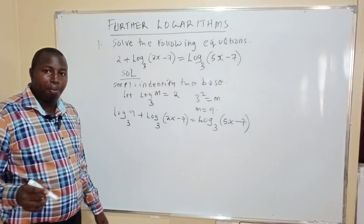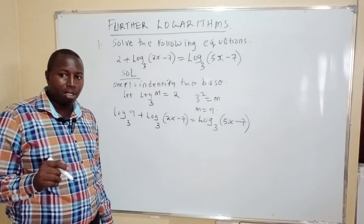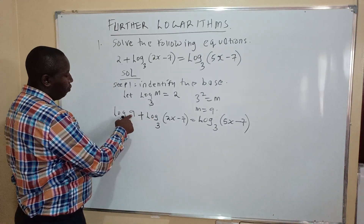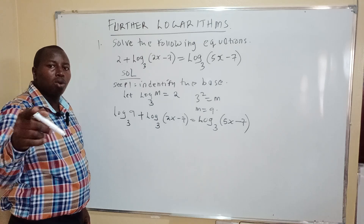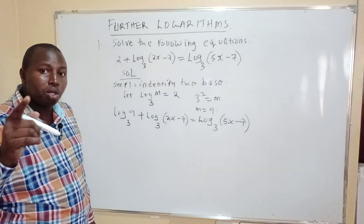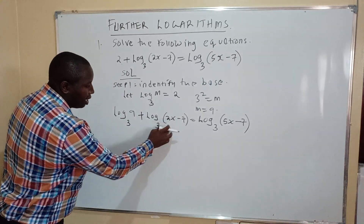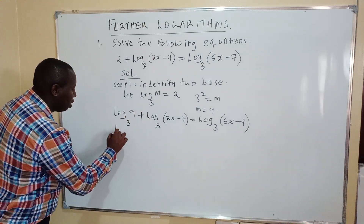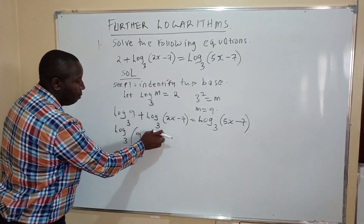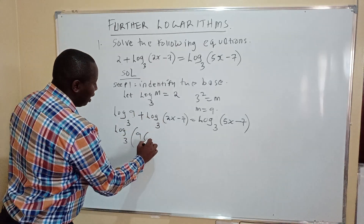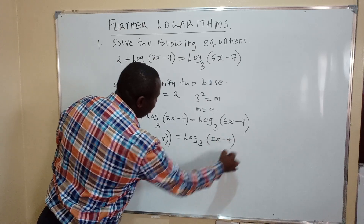The next step, step 2, is to apply the rules of logarithms. Since we are adding log base 3 of 9 and log base 3 of (2x minus 7), we use the multiplication law of logarithms: adding logarithms means multiplying the numbers. So we combine them as log base 3 of 9 times (2x minus 7), which equals log base 3 of (5x minus 7).